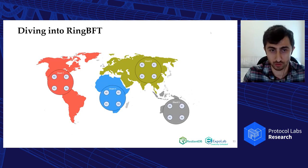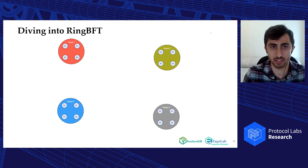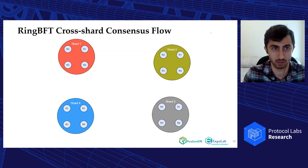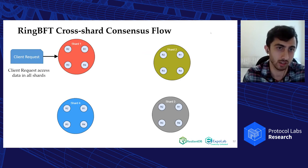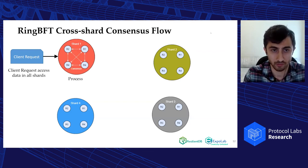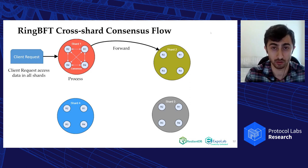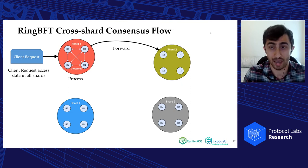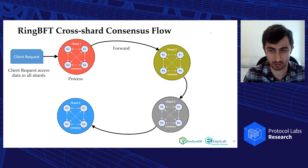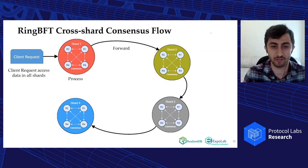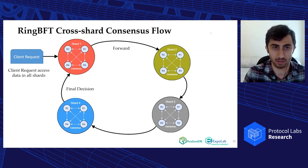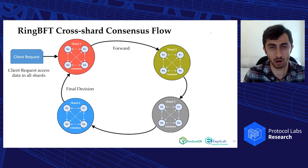Imagine we have four shards in four different regions of the world and a cross-shard transaction that touches data in all four shards. A client sends a request to the first involved shard in the ring. The primary of the first shard runs an instance of PBFT to order the transaction in the first shard. After consensus, the replicas inside the first shard forward the results to the next shard using minimal inter-cluster communication. The next shard then runs a local consensus instance, going through all involved shards around the ring. After reaching the final shard, the decision has been made, and in the next pass through the ring, execution happens in all involved shards.